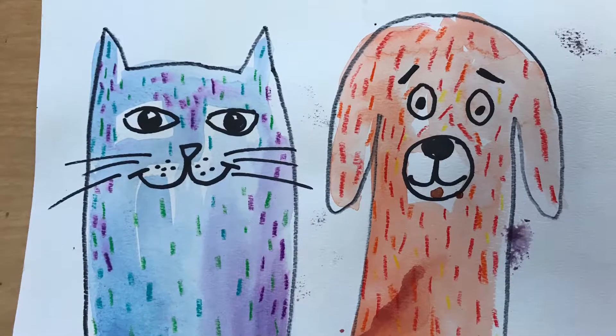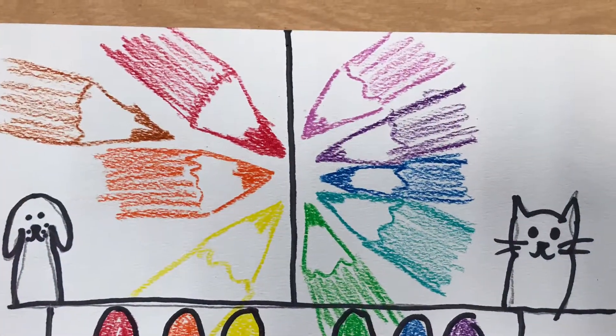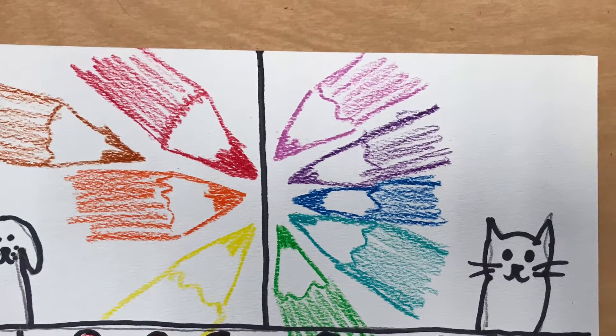Hello students, we're going to make a hot dog and a cool cat. By making them, not only do we make cute creatures, we're going to learn about warm and cool colors.